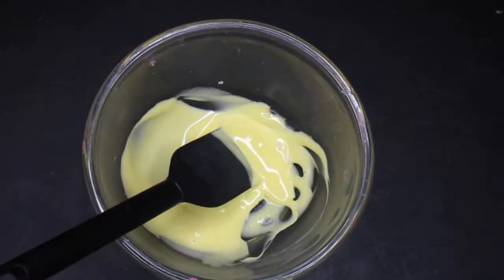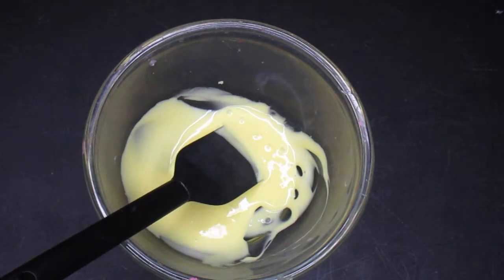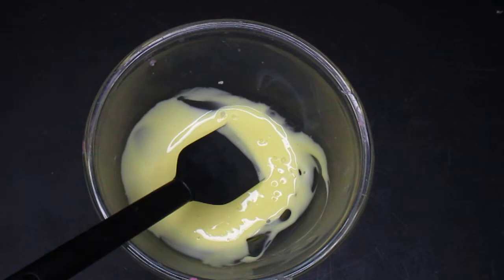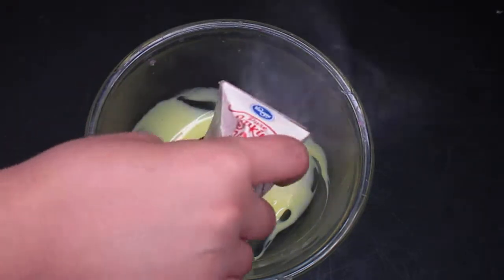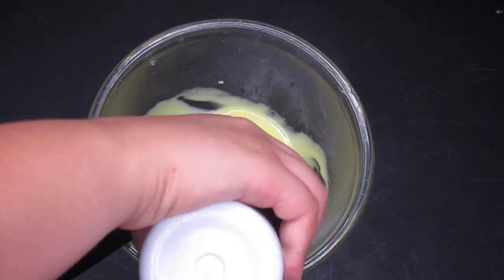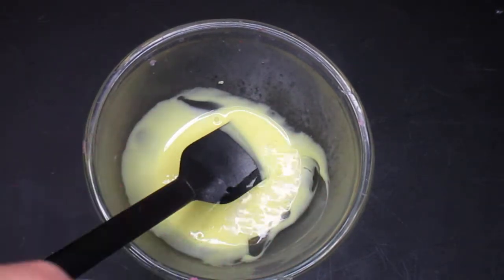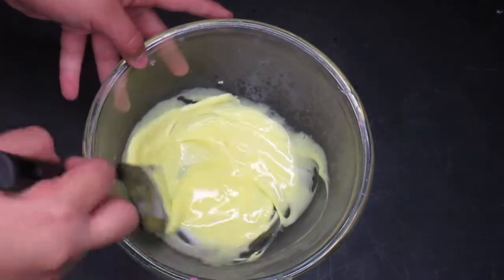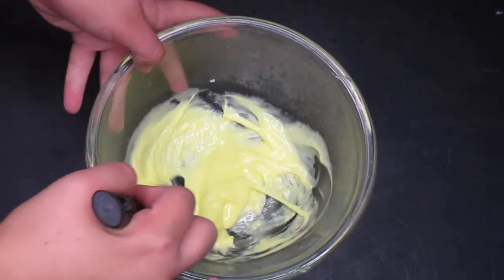And the last step is to add in your activator. Today I'm going to be using contact solution and baking soda. So you're just going to add in a bit of baking soda and then some contact solution. Now that those two are added in, you're just going to mix it together until the slime forms.